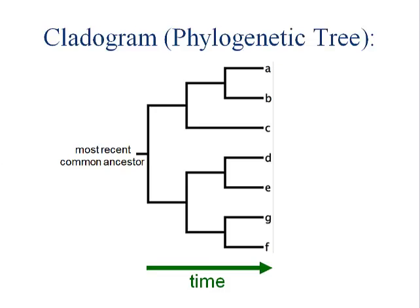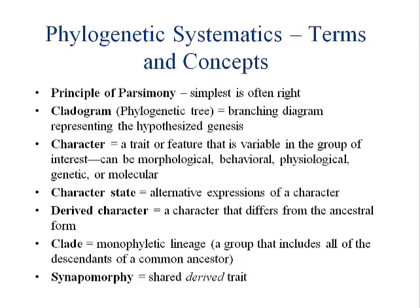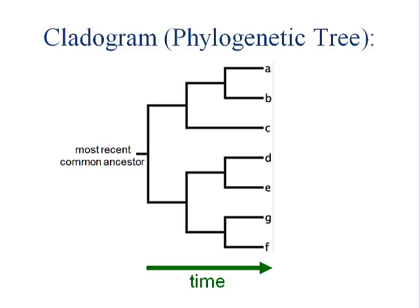A synapomorphy is a shared derived trait. Any traits that are shared and derived are synapomorphies. Now we get to our tree — a recent common ancestor has to be common to everyone on the list.